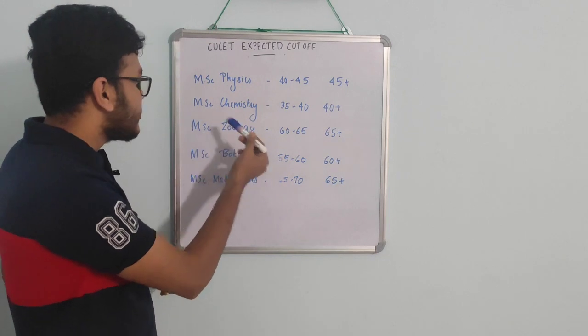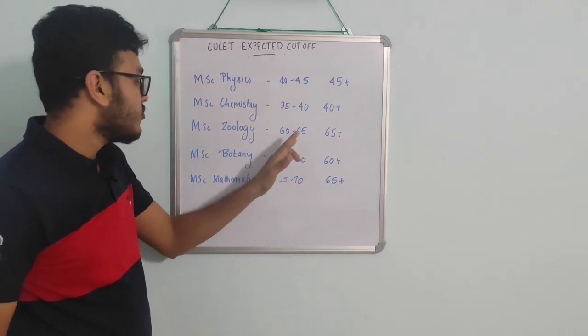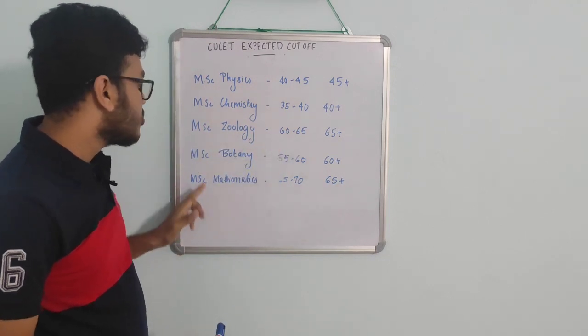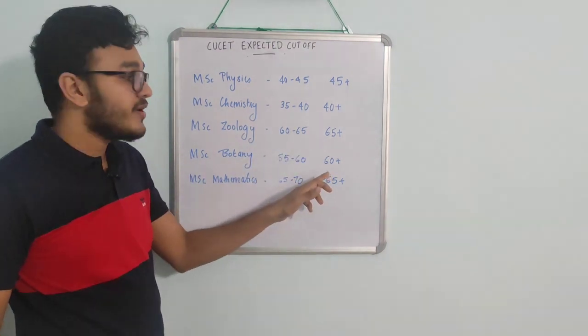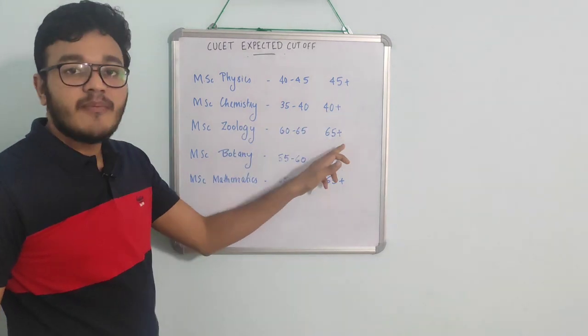In MSC Zoology, there is also mathematics. It is about 60-65, 70-75. But 65 and above, 65 and above are marked as a safe zone.